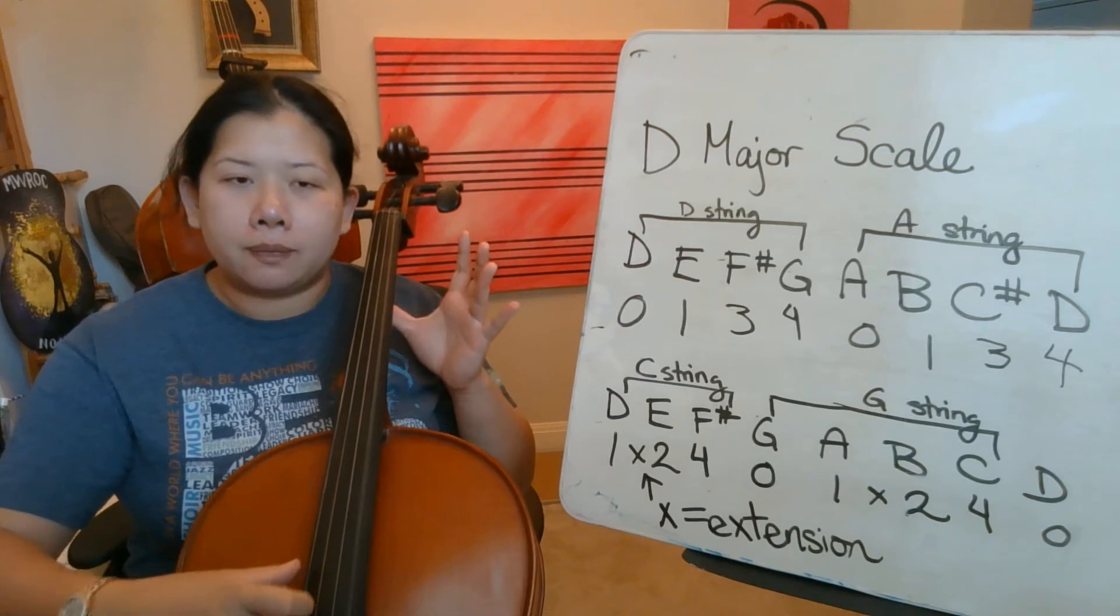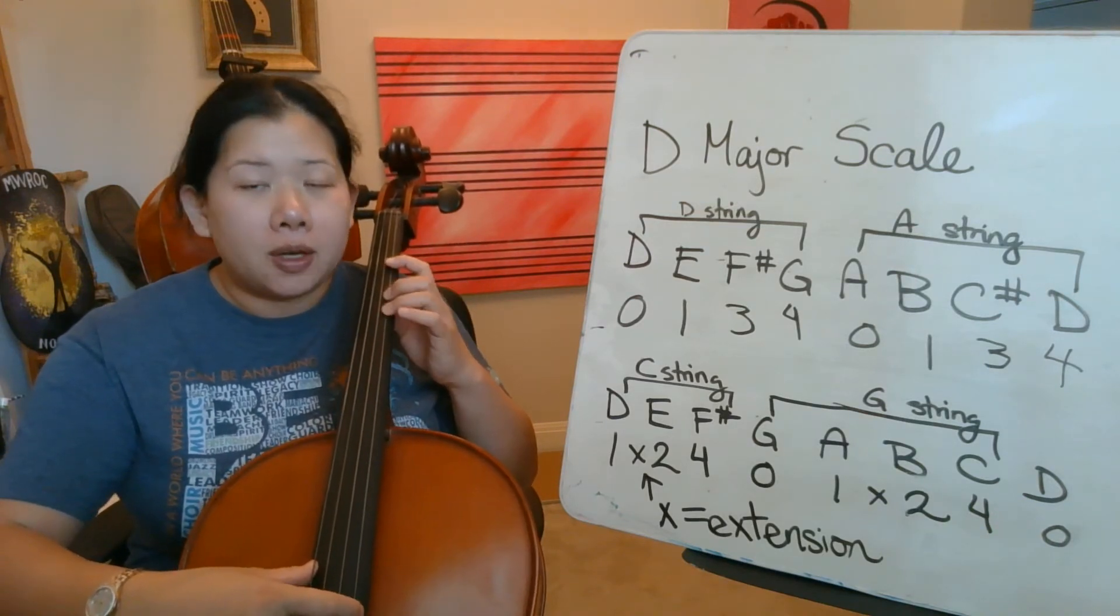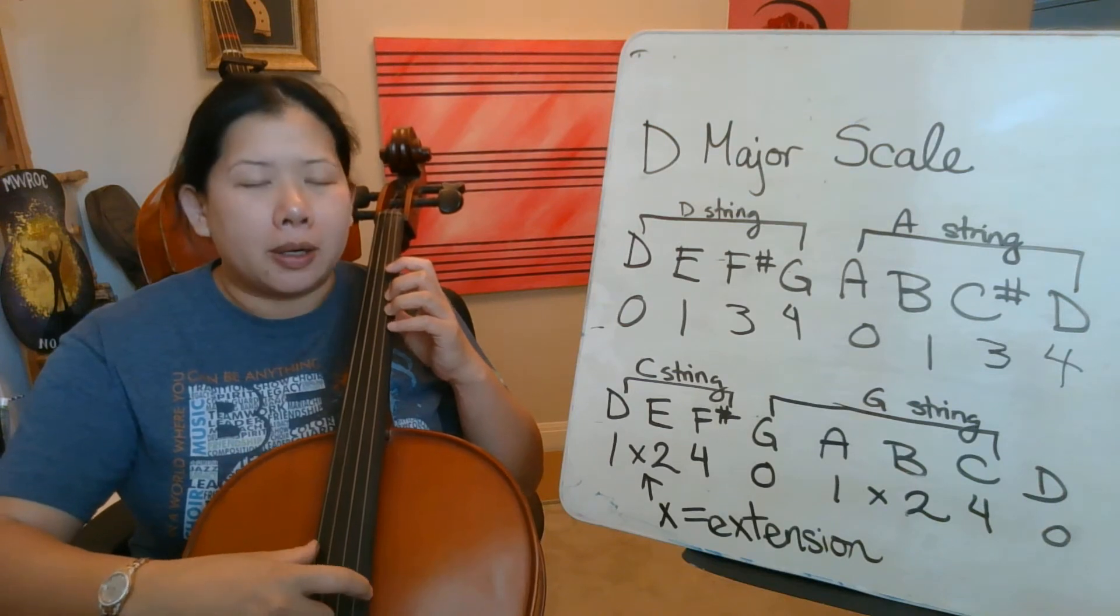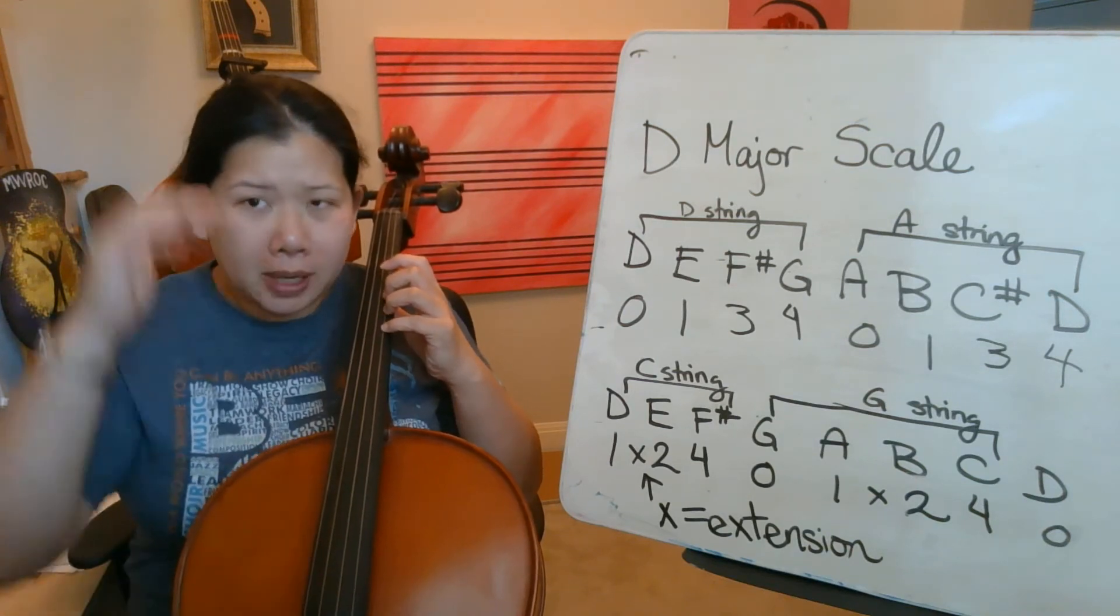Open A. First finger, B, yellow. Third finger, C sharp, red. Sorry. Fourth finger, D, blue. Repeat the top note. Ready, go.